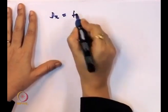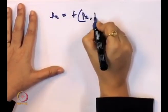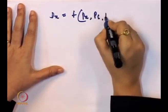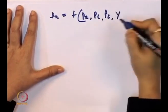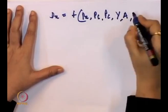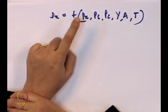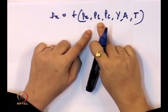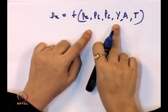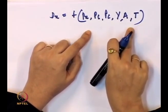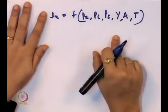For example, consider a demand function. The demand for product X depends on: price of X (Px), price of the substitute good (Ps), price of the complement good (Pc), income (Y), advertising expenditure (A), and taste of the consumer (T). The dependent variable is influenced by many independent variables, not just one.